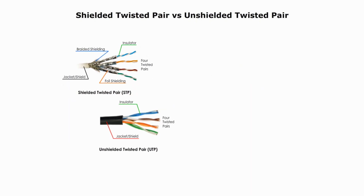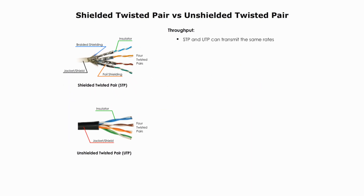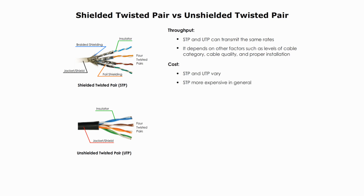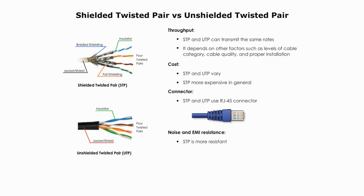Now let's summarize the differences between UTP and STP. STP and UTP in the same level of category can transmit at the same rate. The throughput depends on other factors such as cable category, cable quality, and proper installation. In terms of cost, STP and UTP vary, but generally speaking, STP is more expensive. Both STP and UTP use RJ45 connectors. STP is more resistant to noise and EMI. The maximum segment length for both types on an Ethernet network is 100 meters.